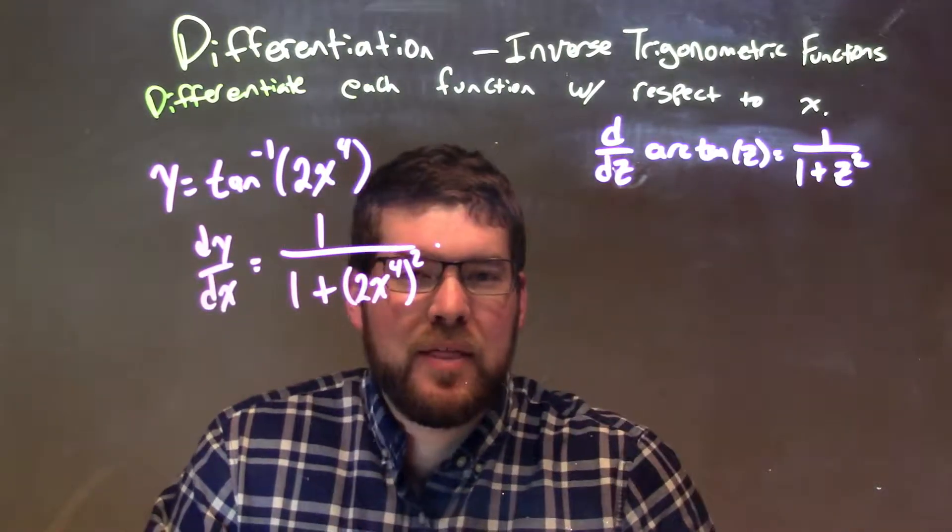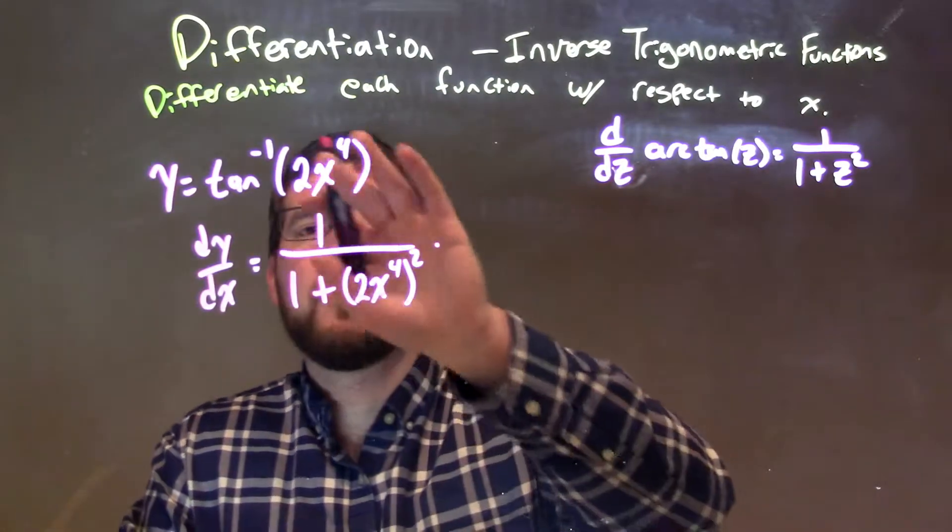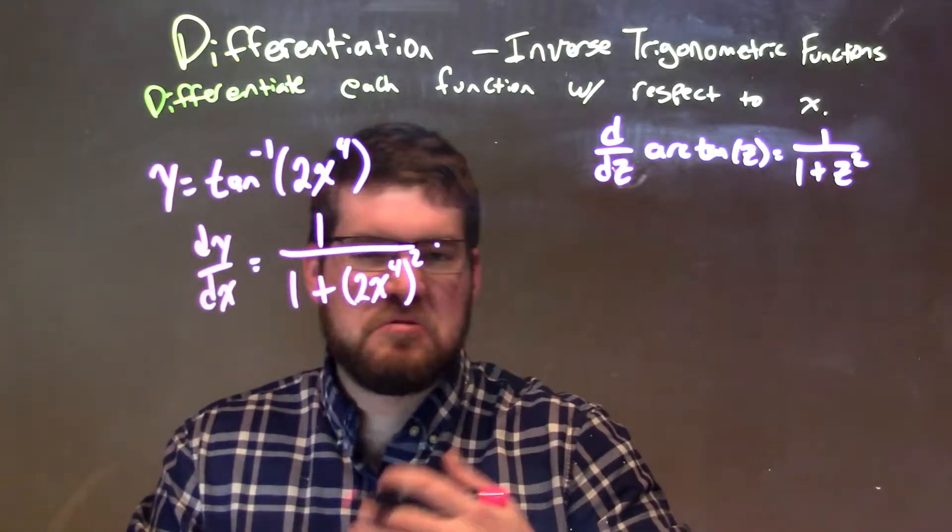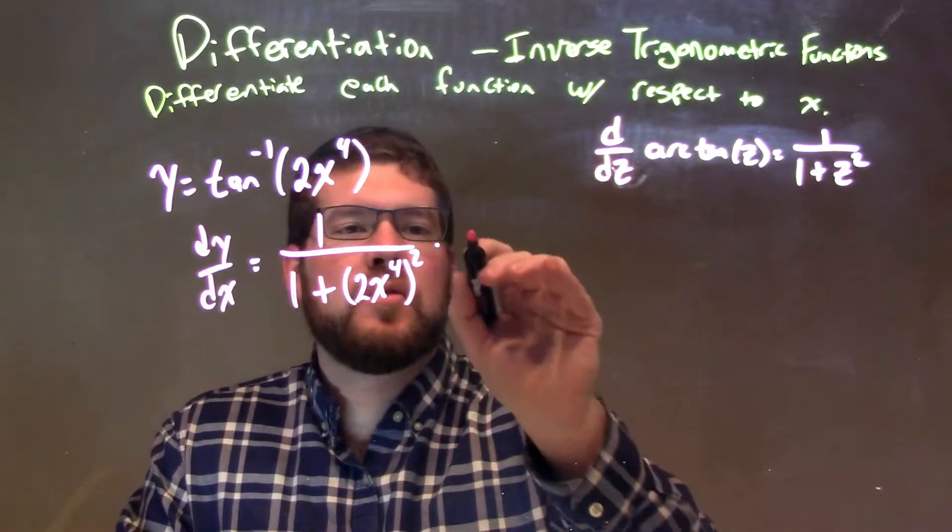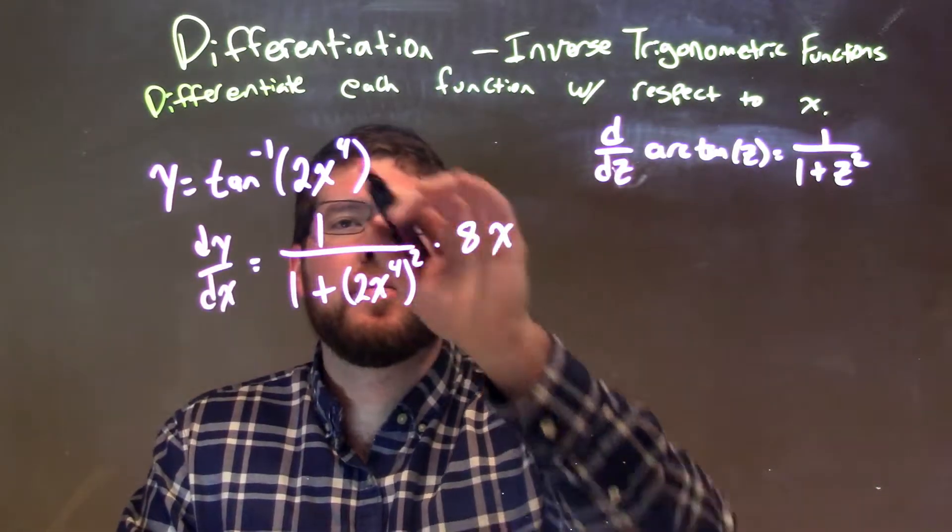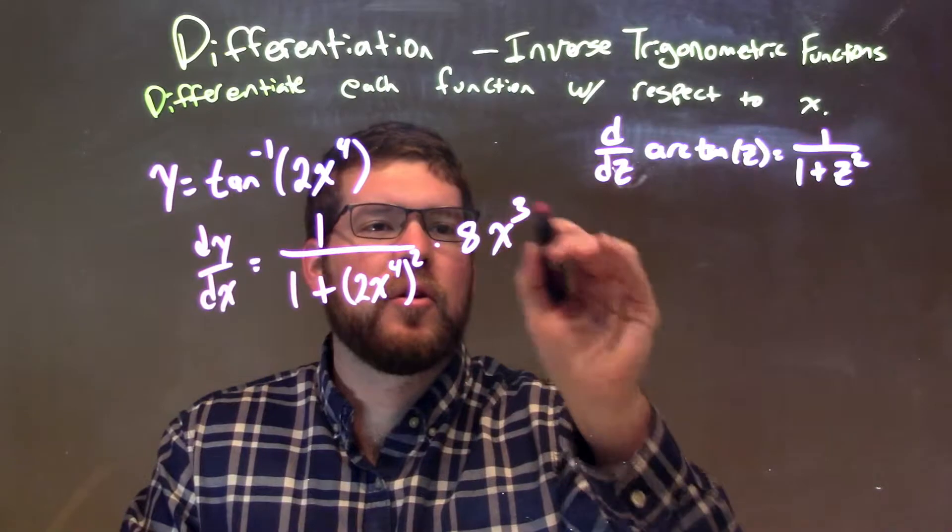Now we still need to apply the chain rule, the derivative of what's inside the parenthesis. This power rule should be easy. 4 times 2 is 8, and we have 8x here, 4 gets dragged by 1 to the third power.